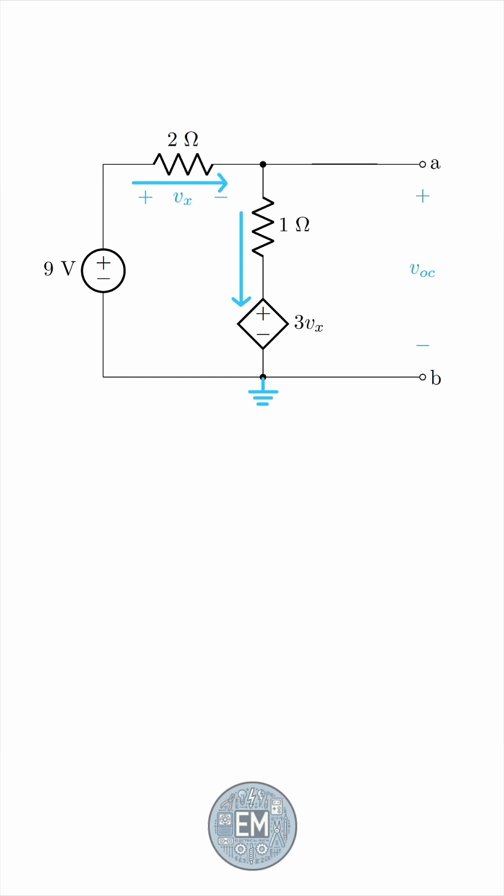So, this node here is nothing but A. Let's write the KCL equation, incoming current equals exiting current. Simplify, and then Vx is 9 minus Va, and so the equation gives us Va equals 7 volts.